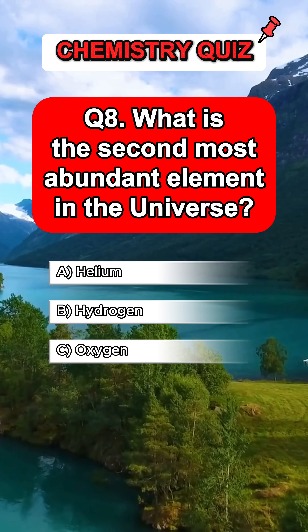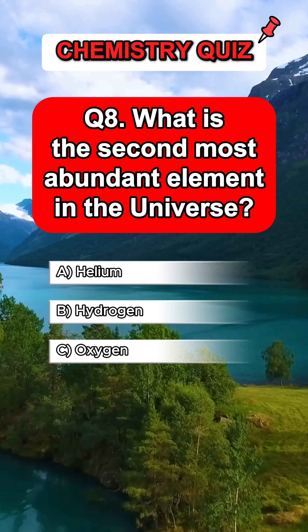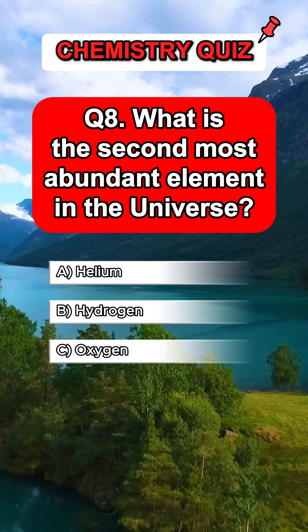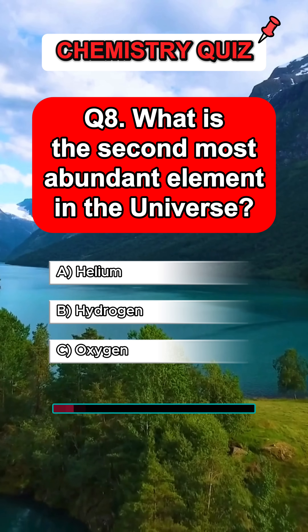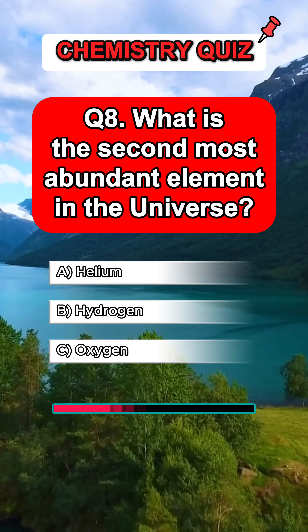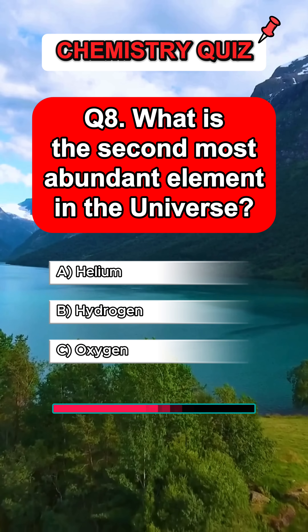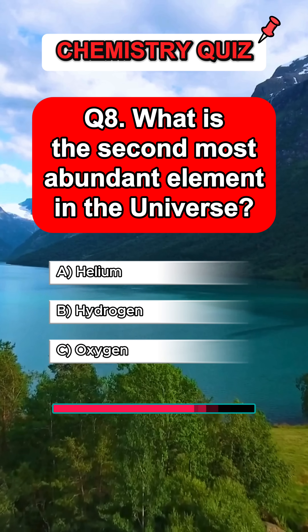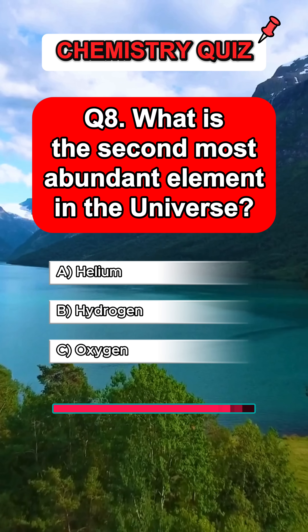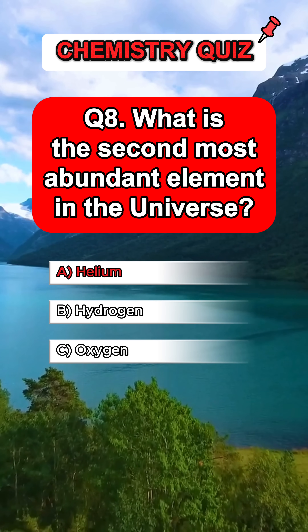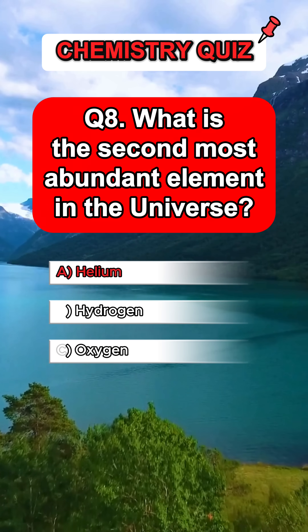Question 8. What is the second most abundant element in the universe? Answer A. Helium.